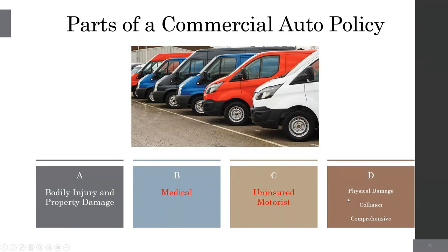Coverage D is physical damage — in personal auto it's collision and other-than-collision; for commercial it's called collision and comprehensive. There's also a third coverage called specified cause of loss — a named peril physical damage coverage for commercial vehicles, covering approximately seven perils. It's very limited and inexpensive. You can blend: collision and comprehensive, collision only, comprehensive only, collision and specified cause of loss, or specified cause of loss only.